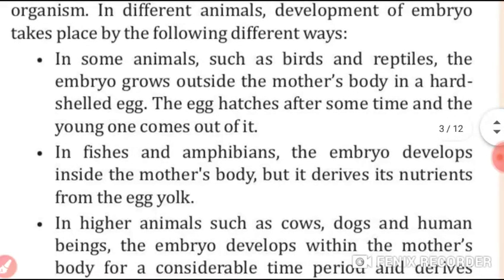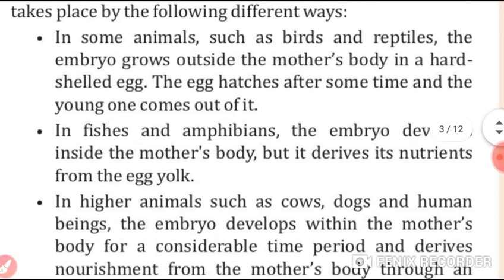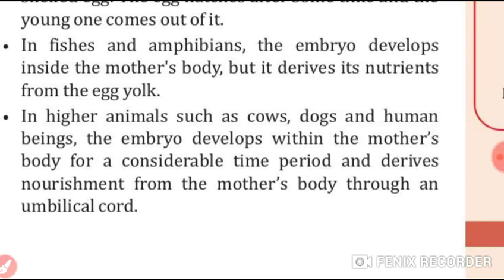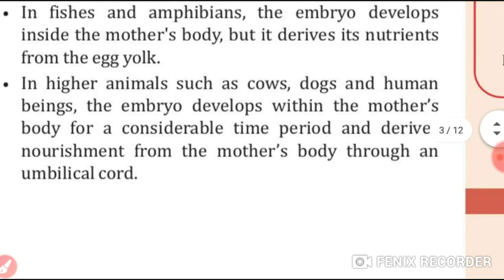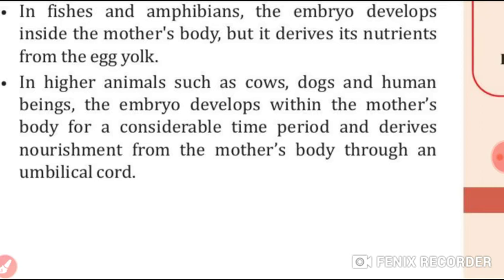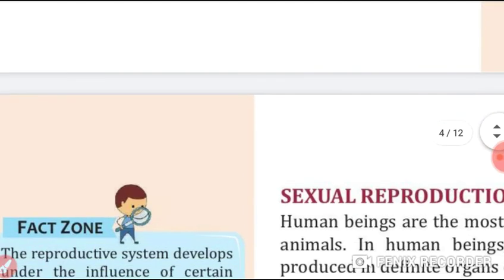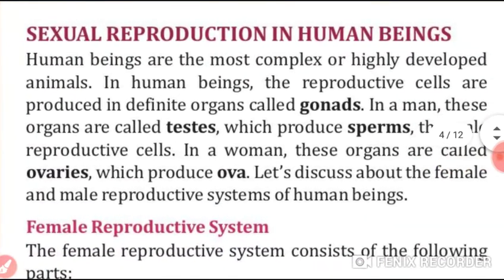In different animals, development of the embryo takes place by different methods. In some animals such as birds and reptiles, the embryo grows outside the mother's body in a hard-shelled egg; the egg hatches after some time and the young one comes out. In fishes and amphibians, the embryo develops inside the mother's body but derives its nutrients from the egg yolk. In higher animals — cow, dogs, human beings — the embryo develops within the mother's body and derives nourishment through an umbilical cord.